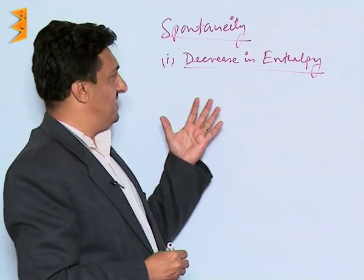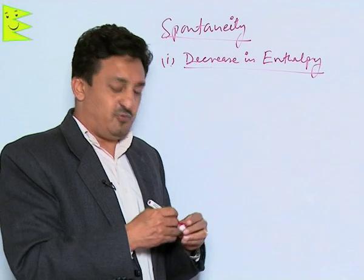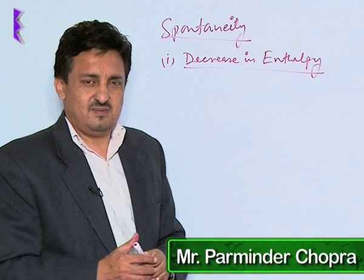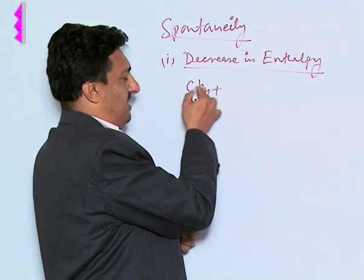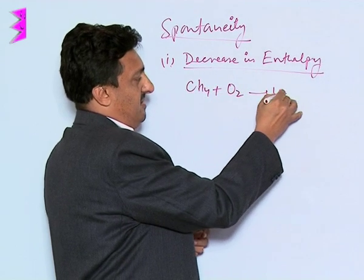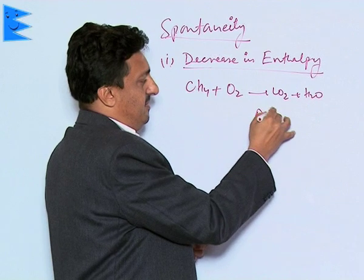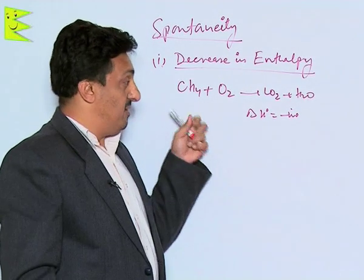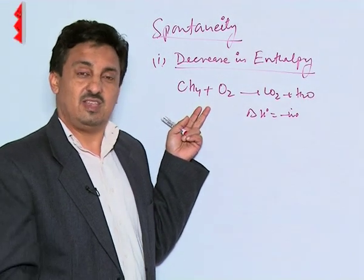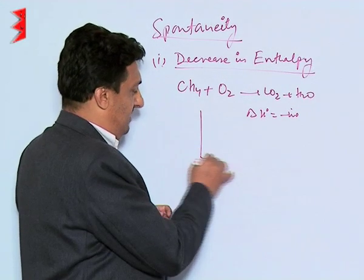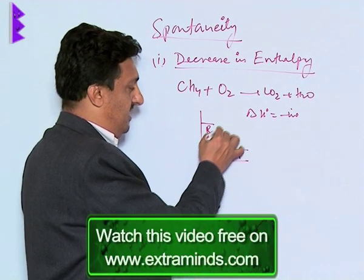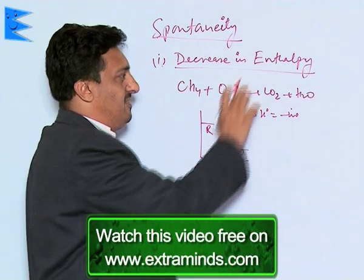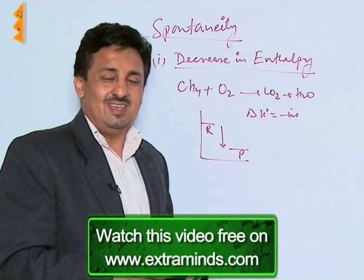Let us see the first thing: the decrease in enthalpy. We are always trying to find out what exactly could be the reason which makes certain processes spontaneous and others non-spontaneous. For example, combustion of fuels like CNG gives us CO2 and H2O, and the enthalpy of reaction is negative. All combustion processes are spontaneous. If the reactant is here in terms of energy and the product is here, the energy of the system is getting decreased — so it is the decrease in enthalpy which is compelling the reaction to become spontaneous.